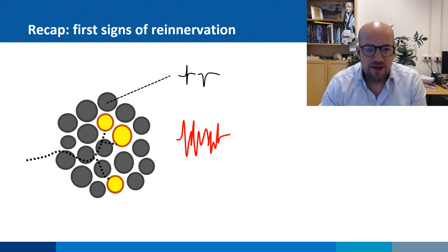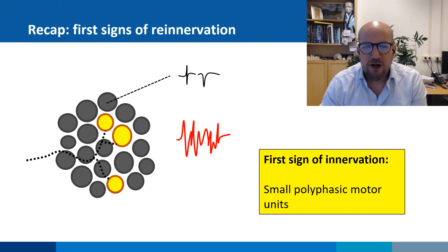As the nerve starts to regenerate, it will form new sprouts that enter the muscle and start making new connections. However, these sprouts initially are still immature and the number of muscle fibers connected to a single axon is low. This leads to small polyphasic motor unit potentials, as you can see here.